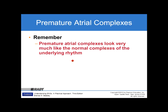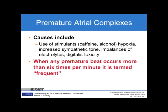Premature atrial complexes look very much like the normal complexes of the underlying rhythm, so they can be hard to spot, especially if they have some rhythm to them. Causes include stimulants, caffeine, alcohol, hypoxia, increased sympathetic tone from fear or anxiety, electrolyte imbalances, and digitalis toxicity. When any premature beat occurs more than six times per minute, it is termed frequent — whether that's more than six PACs or more than six PVCs, they are considered frequent.